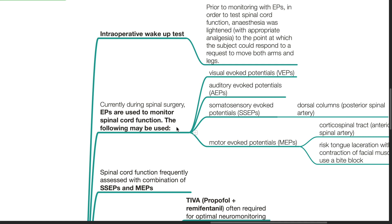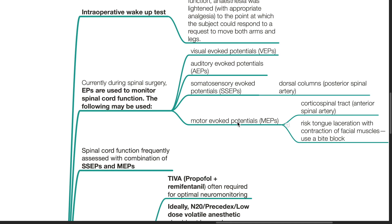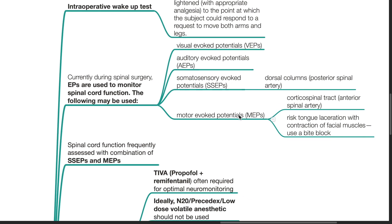The following may be used: visual evoked potentials, auditory evoked potentials, somatosensory evoked potentials, and motor evoked potentials. The somatosensory evoked potentials assess the dorsal columns, which are supplied by the posterior spinal artery. Motor evoked potentials assess the corticospinal tract, which is supplied by the anterior spinal artery.